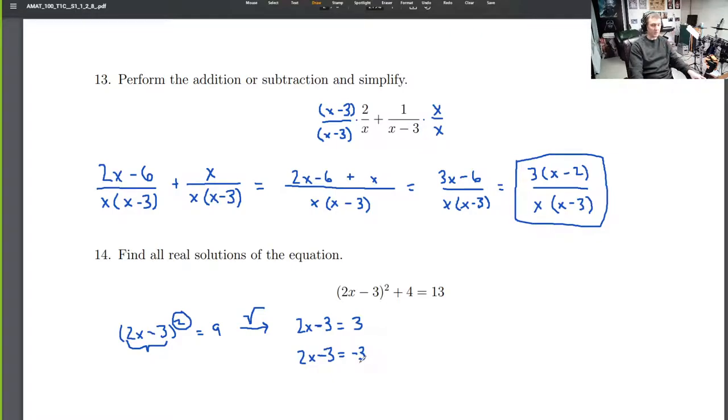Because there's a possibility here that x, whatever it is, when you plug it in, gives you positive 3. Or there's the second possibility of when you plug in x, you get negative 3.